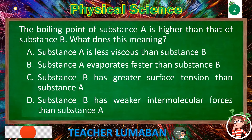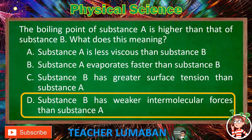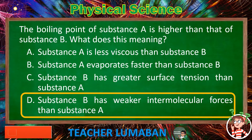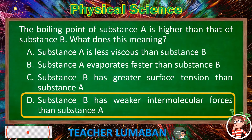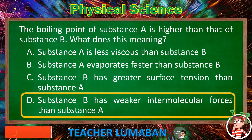The correct answer is Letter D: Substance B has weaker intermolecular forces than substance A. The boiling point of substance A is higher than that of substance B, meaning that substance B has weaker intermolecular forces than substance A.